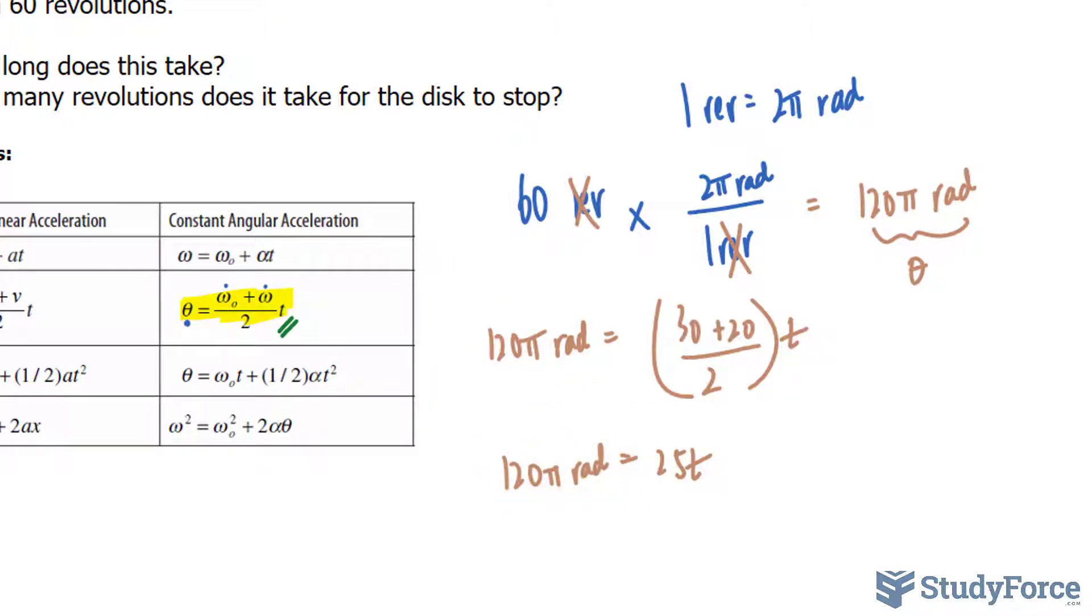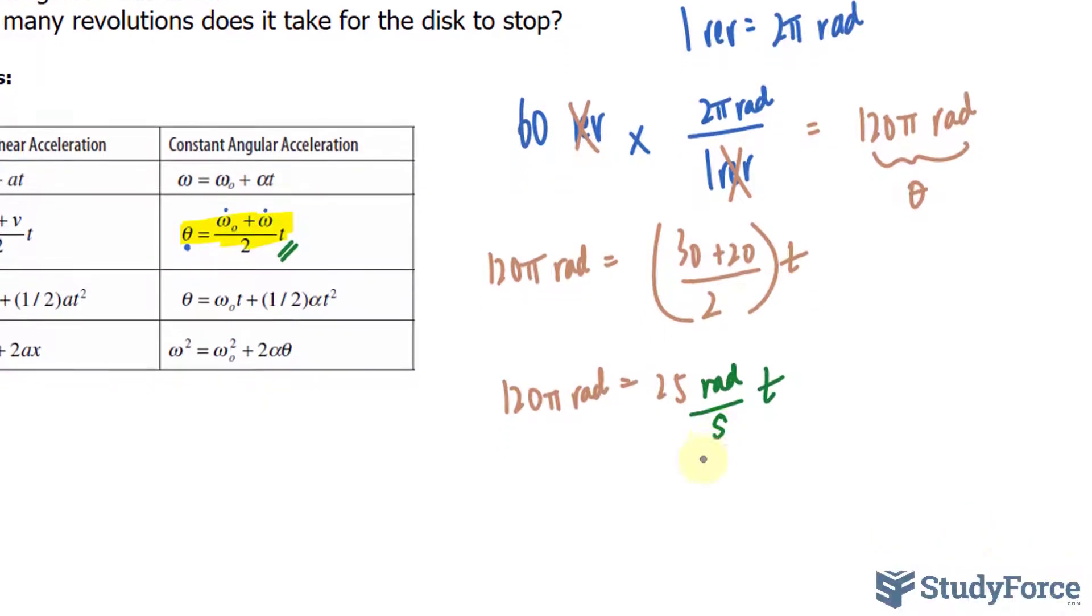Now just to be consistent here, the units for this 25 should be in radians per second. And this time is just the variable T. Dividing both sides by 25 radians per one second, we're just using some basic algebra here. What will happen is that this number and this number will cancel out and on the left side, the radian unit and the radian unit will also cancel out.